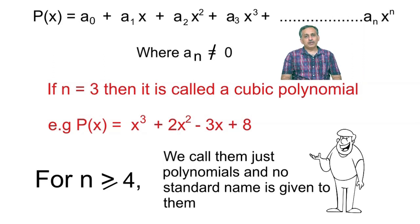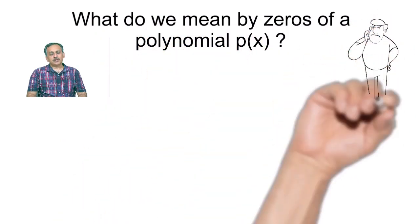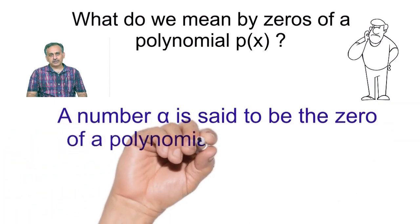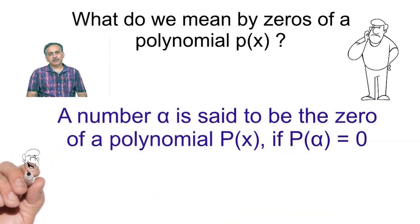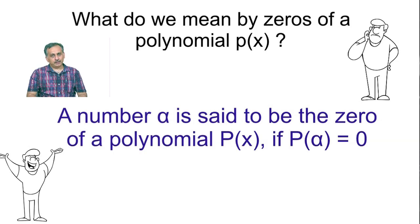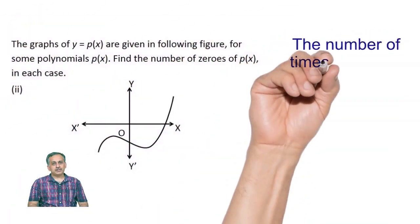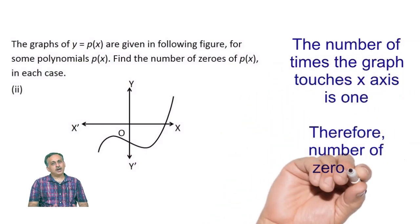Next, we want to know what do we mean by zeros of a polynomial. A number alpha is said to be the zero of a polynomial p of x if p of alpha is equal to 0. It means if you put alpha in place of x, the value of the polynomial becomes equal to 0.